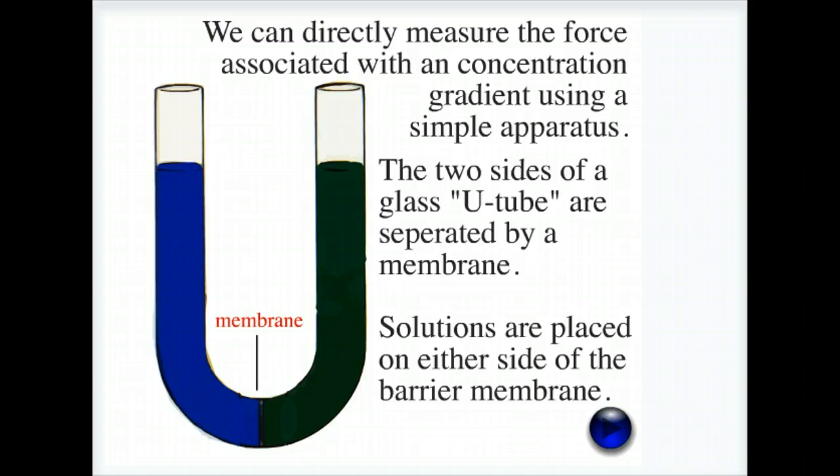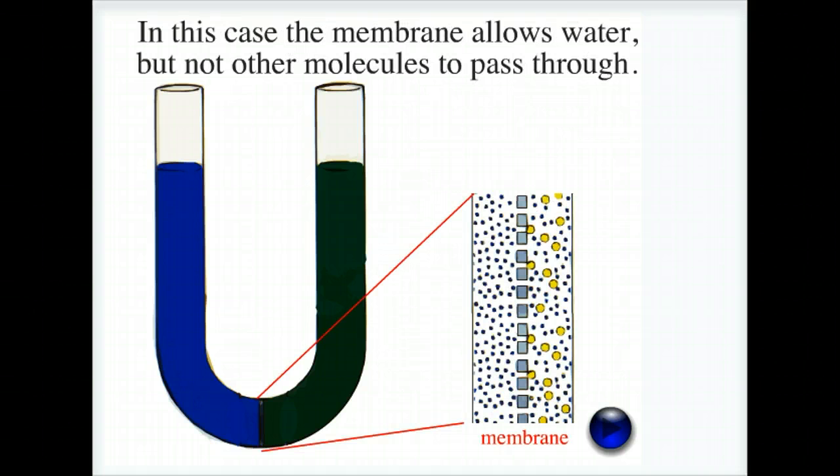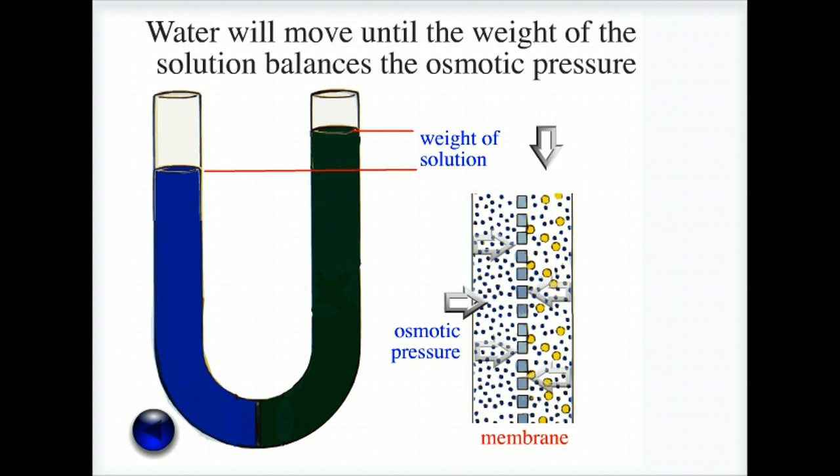lots of solute molecules on the right. The two solutions are separated by a membrane that does not let the solute molecules (yellow spheres) pass through it. Water, however, can pass through the membrane easily. The net movement of water